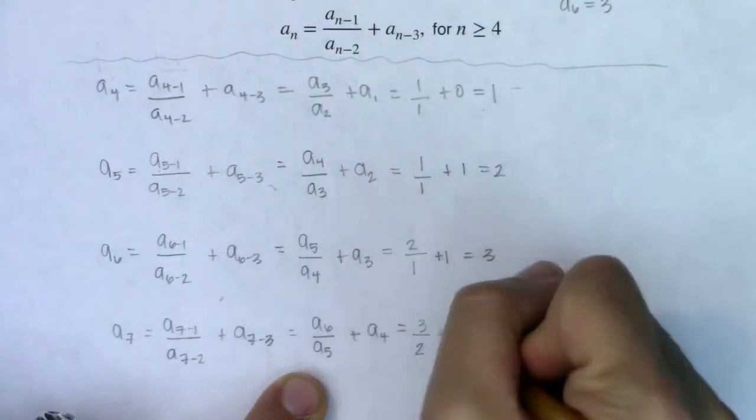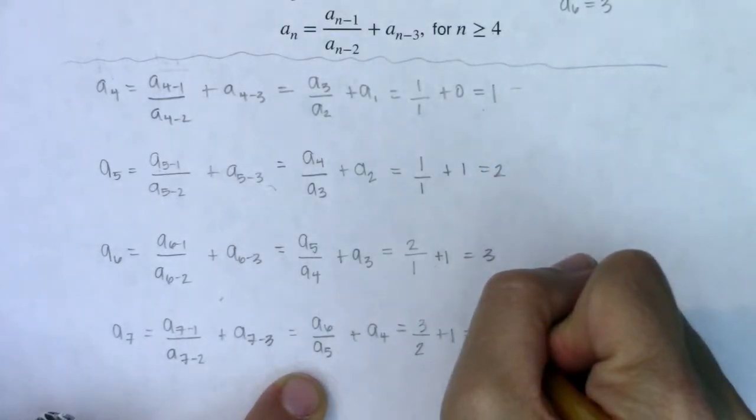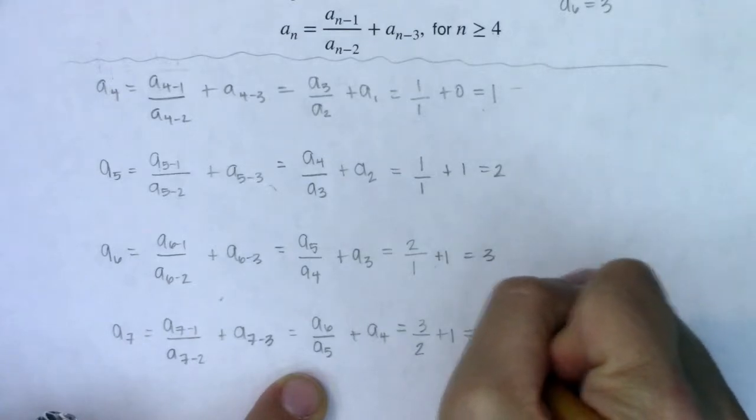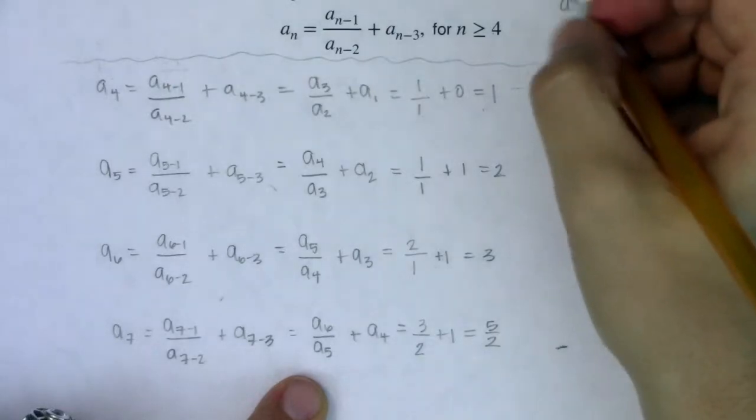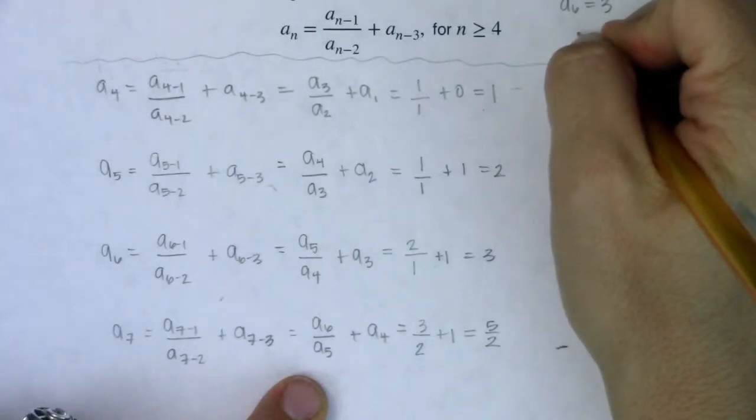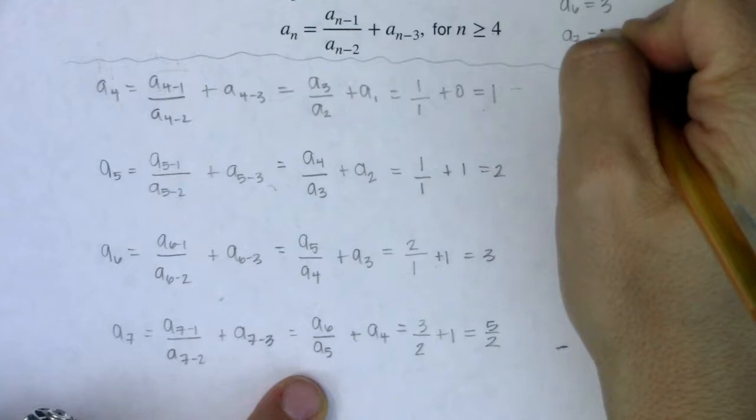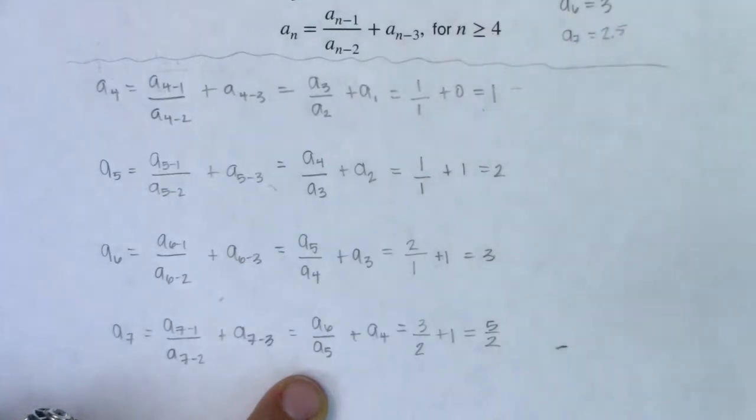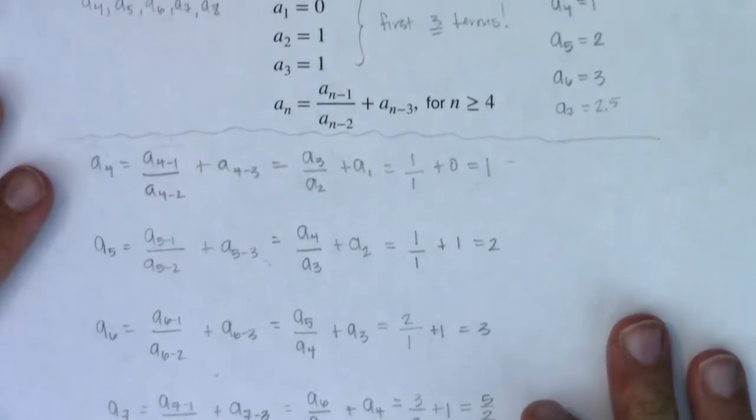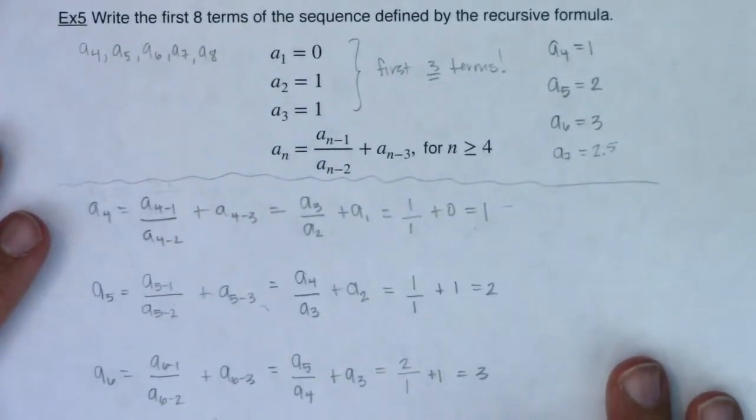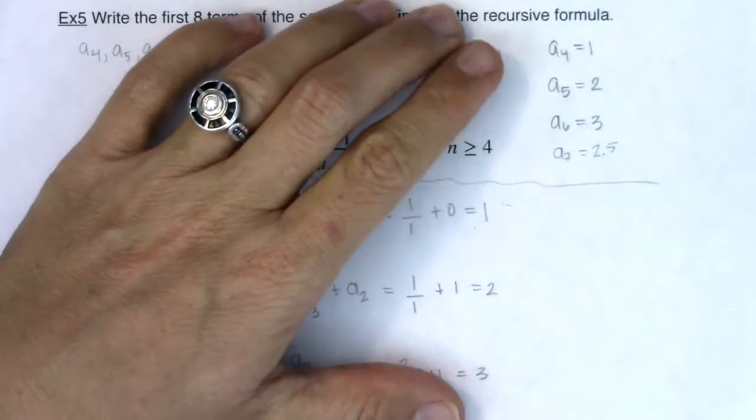So we are looking at a sub six over a sub five plus a sub four. So a sub six was three. A sub five was two. And a sub four was one. So three halves plus one is five halves. Now that's it. That's my answer. Five halves or you could have told me it was 2.5. So I'm going to keep on keeping track here. We've got a sub seven is now 2.5. Or I could say five halves.